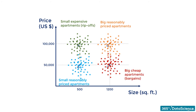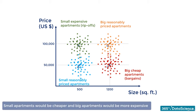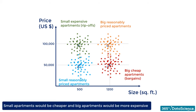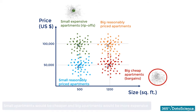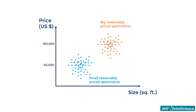All else equal, what are we likely to observe, usually? Small apartments would be cheaper, and big apartments would be more expensive. Maybe the rip-offs were representing apartments in the city center, while the bargains were apartments in the suburbs. If we separate them from the rest, we will be left with something that looks very familiar — our good old regression.